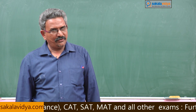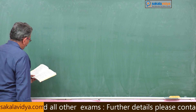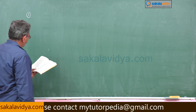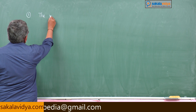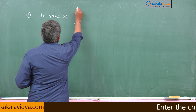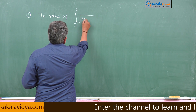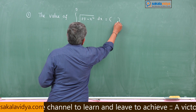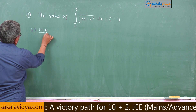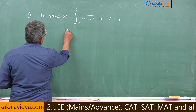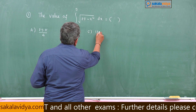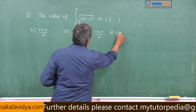Shall we go to the next episode? Thank you. Let us go to the next episode. First problem in this episode: the value of the integral from 0 to 5 of √(25 − x²) dx. Options: (a) 25π/4, (b) 5π/4, (c) 125π/4, (d) 625π/4.